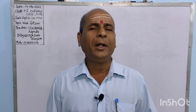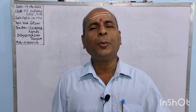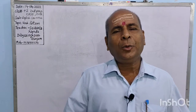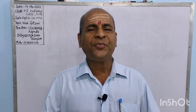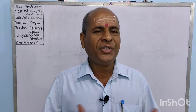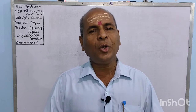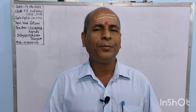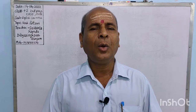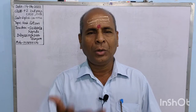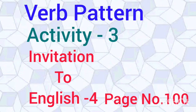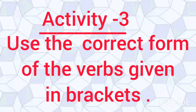So students, we have discussed sections 1, 2 and 3. Today, we will learn some exercises and answer some activities on our mobile screen. We have previously discussed about activity 1 and 2. Now, we will discuss about activity 3, on page number 100. Activity 3: use the correct form of the verb given in brackets.